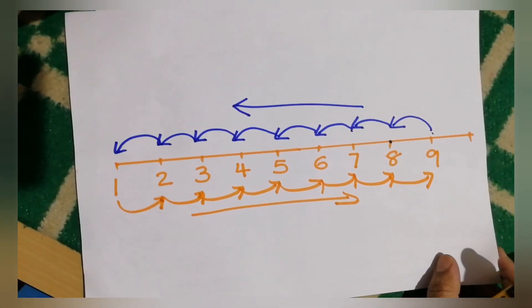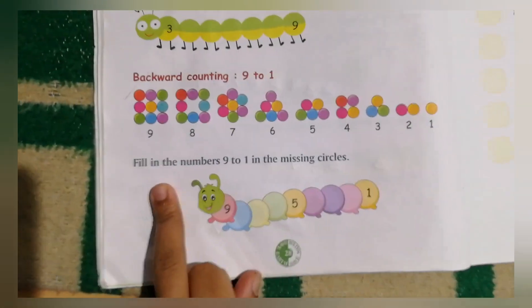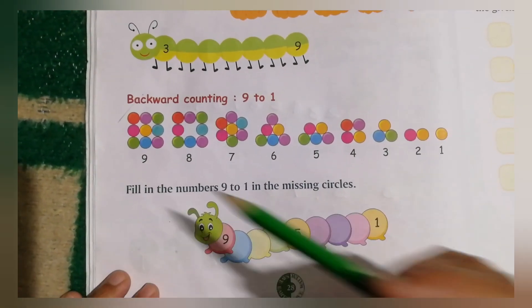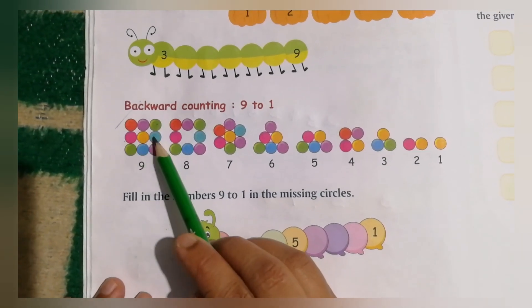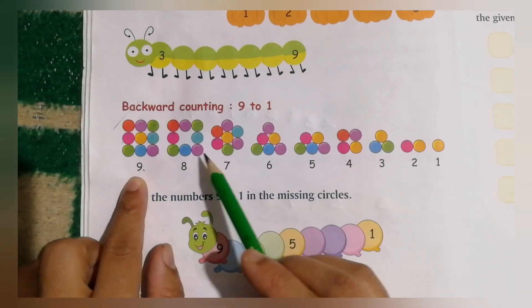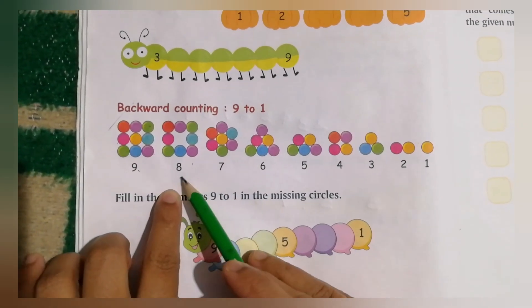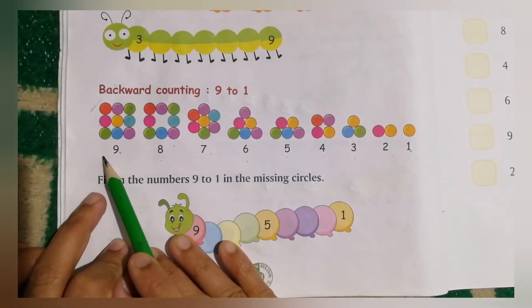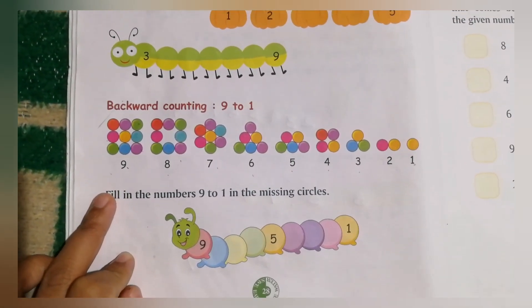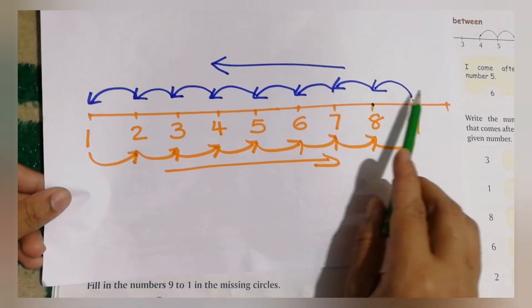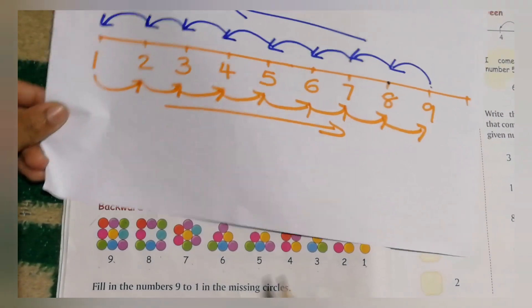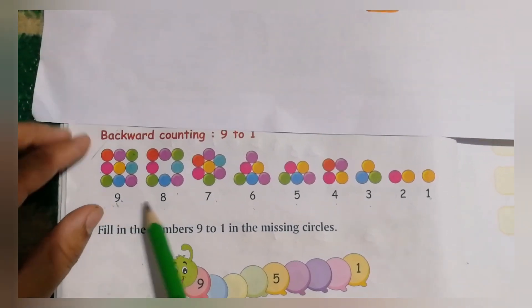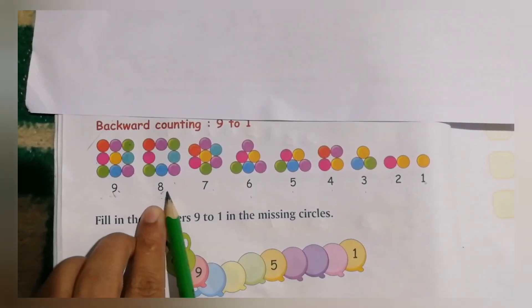We can do some activity in our textbook. They have given a backward counting section. First, some balls — how many? Let's count: one, two, three, four, five, six, seven, eight, nine. Backward: nine, eight, seven, six, five, four, three, two, one — that is backward counting, coming from a big number to a small number. Here they have given nine, and the next is eight.